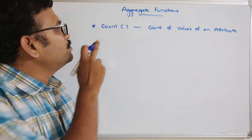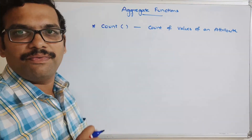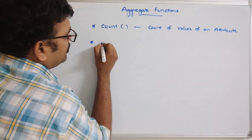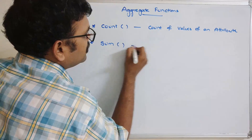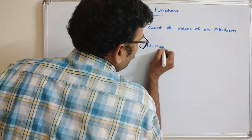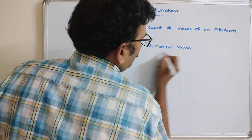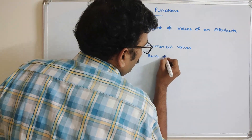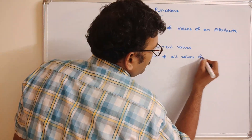The first one is the COUNT function. If you use this COUNT function, it will give the number of values available for that particular field — that is, the count of values of an attribute.